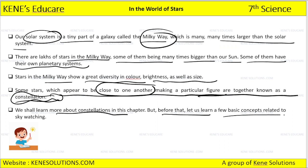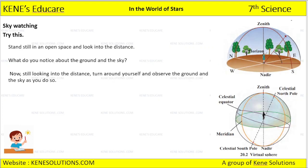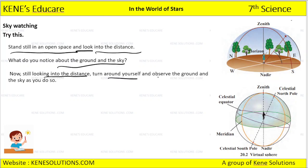But before that, let's learn a few basic concepts related to sky watching. Stand still in an open space and look into the distance. What do you notice about the ground and the sky? Still looking into the distance, turn around yourself and observe the ground and the sky.